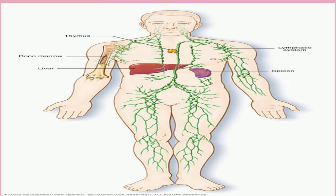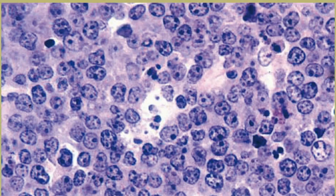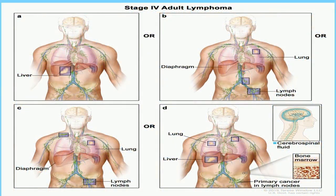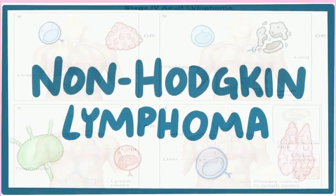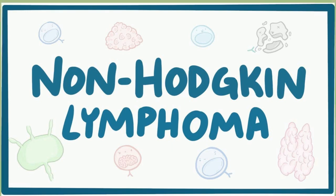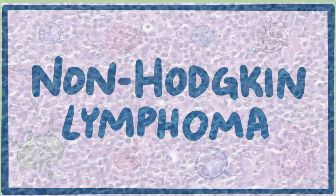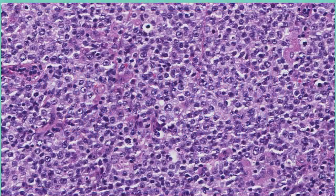Non-Hodgkin lymphoma is the seventh most common cause of cancer-related deaths in the United States. The risk of developing non-Hodgkin lymphoma increases with age, and it is more common in males than in females and in Caucasians. North America has one of the highest incidences of non-Hodgkin lymphoma. The exact cause is unknown; however, there are multiple medical conditions associated with an increased risk of developing the disease.